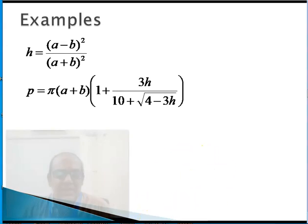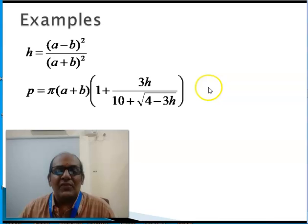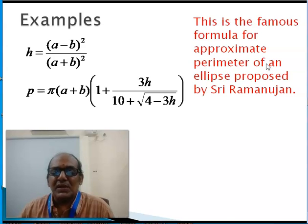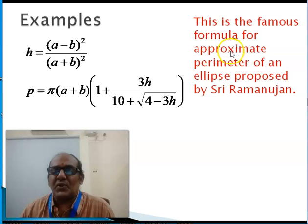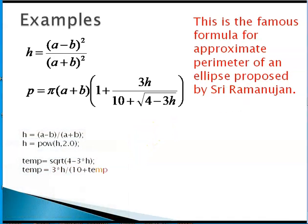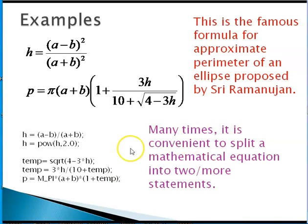Let us see another example. This example is an equation for computing the perimeter of an ellipse with semi-major axis A, semi-minor axis B. This approximate formula is proposed by Sri Ramanujan, the genius mathematician. If you have to write a series of C statements to represent these, perhaps we would do something similar to this as shown over here.